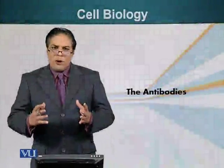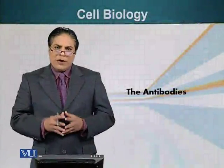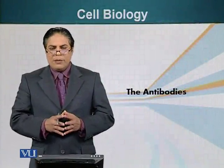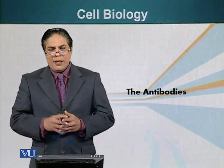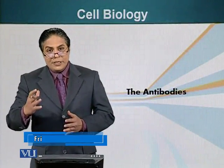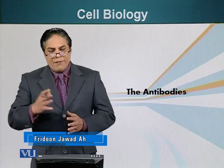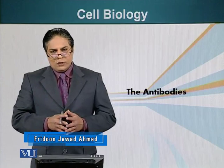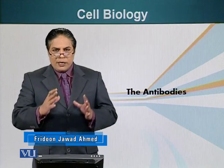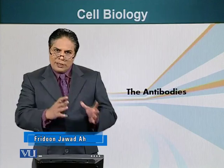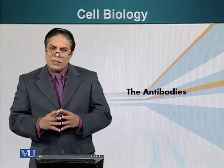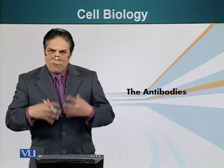I have told you about two types of antibodies that appear on the surface of the B cell: IgM and IgD. In fact, there are actually five different classes of antibodies. Let's look at the differences between these antibodies and how they function.